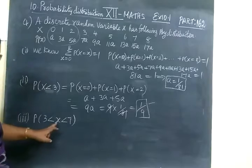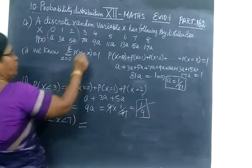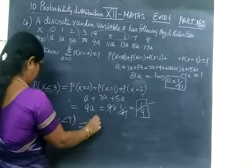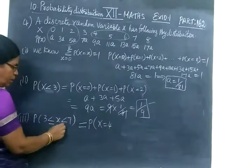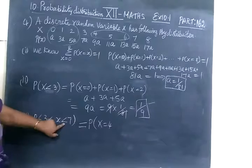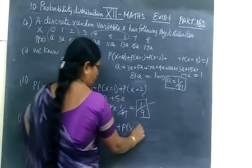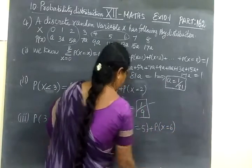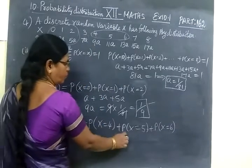Next we find P of X lies between 3 and 7. So 3 and 7 means 4, 5, 6. If it is less than or equal to, you select 3 also. But here only less than. So P of X equal to 4 plus P of X equal to 5 plus P of X equal to 6. Between 3 and 7: 4, 5, 6.